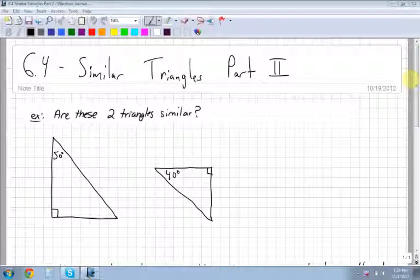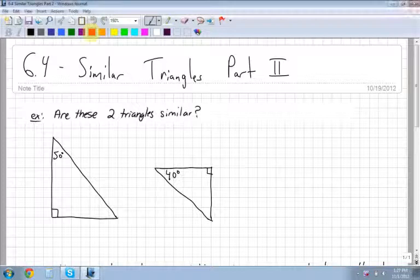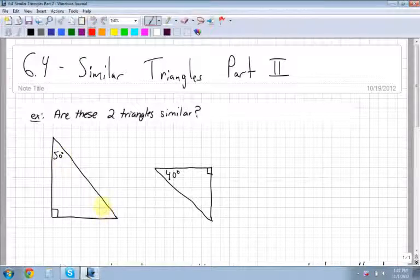So the first question I'm looking at: are these two triangles similar? The first thing you have to look at are the angles. In order to figure out if two triangles are similar, all the angles have to be the same.